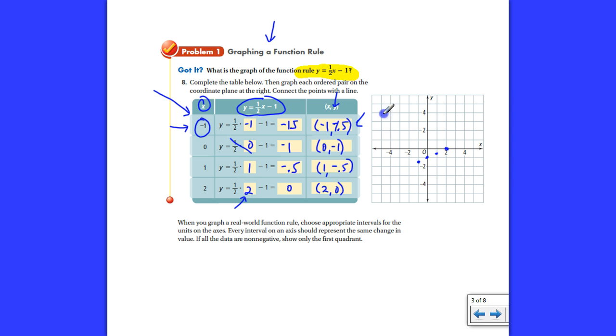So, there you see the points. It asks us to go ahead and connect those points with a line. So, take a straight edge and graph that line like such, hopefully better than mine. And you have a graph of the function y equals one-half x minus one. When you graph in a real-life function rule, choose appropriate intervals for the units on the axis,